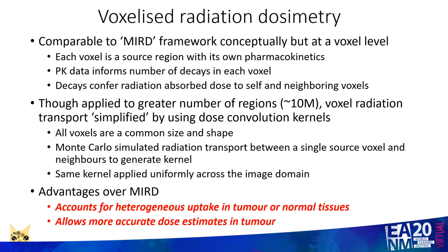Voxelized radiation dosimetry solves many of these problems. It divides the body up into a series of voxels rather than a series of body organs, and although there are some simplifications involved in applying these techniques, it does account for heterogeneous uptake of radiation in tumours and normal tissues, and in particular — of relevance to this talk — allows for a much more accurate estimate of dose in tumour.